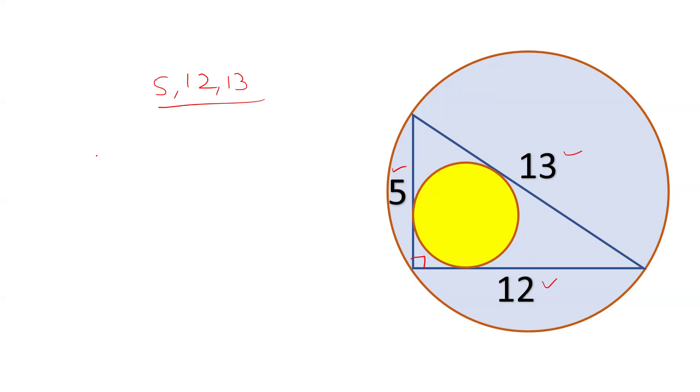In a right angle triangle, the radius of the circumcircle—that is the circle which is circumscribing the triangle—is the hypotenuse divided by 2.